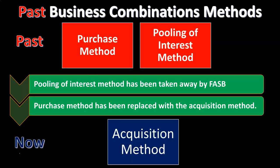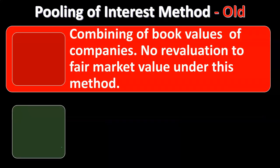So when we talk about business combinations — which generally refers to the external expansion of a business — businesses can expand internally or externally, but we're typically talking about external expansion. We're going to be using the acquisition method for business combinations.